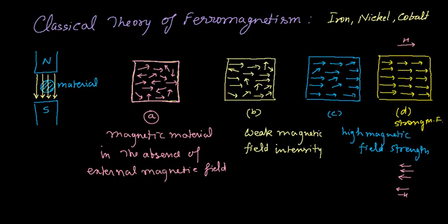A complete cycle of magnetization occurs when first there is no external magnetic field, then you apply some external magnetic field. That is point P, and then after, you are increasing the strength.